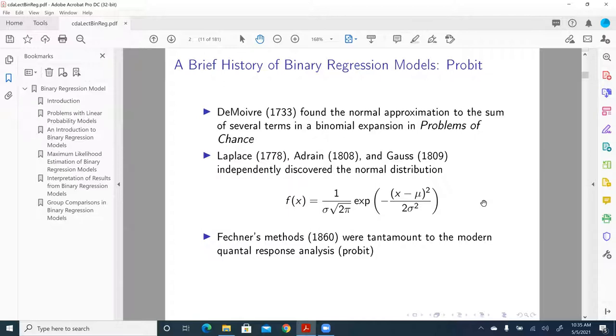And Fechner's methods invented in 1860 were tantamount to the modern quantum response analysis probit. Gaddum in 1933 and Bliss in 1934A and 1934B invented probit.